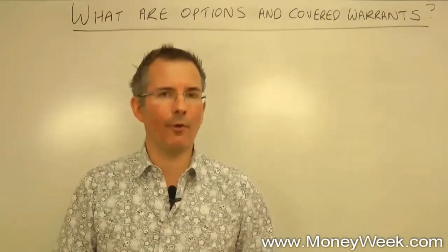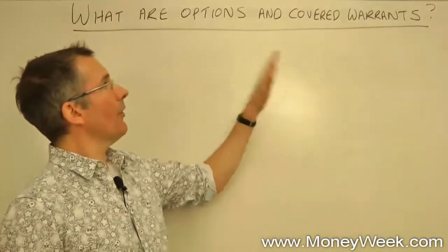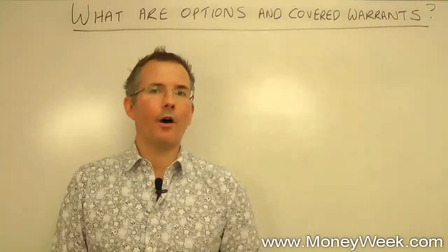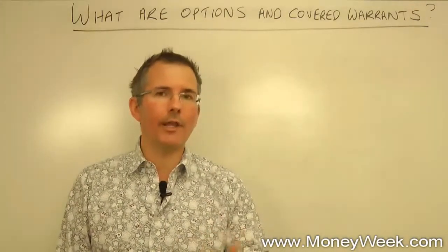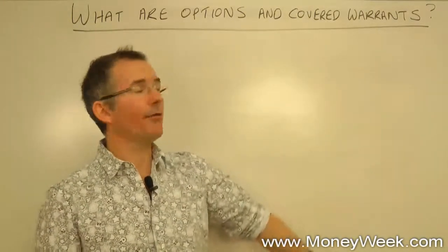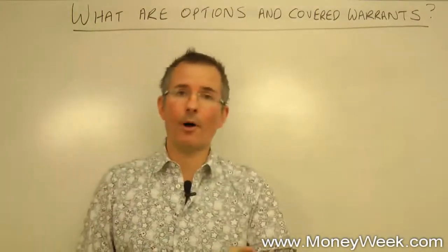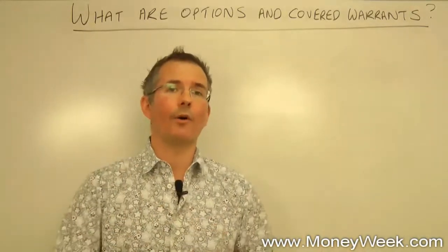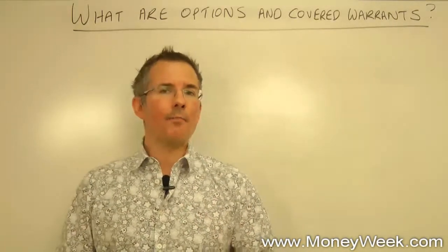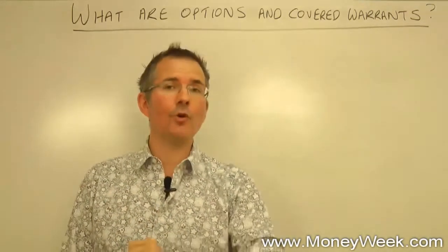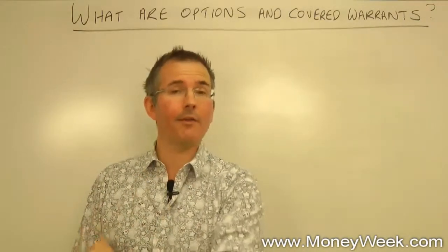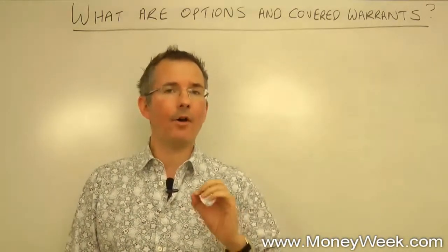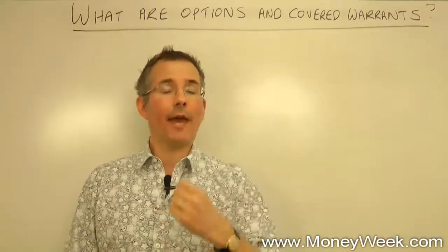Options tend to be what professional traders deal with. Covered warrants are the very similar retail equivalent — when you see adverts for products in the retail market they often have a slightly different name, but the two are very similar. Everything I say about options can be broadly applied to covered warrants. First of all, we are dealing with a derivative. There are basically only three types of derivative: forwards and futures, swaps, and options — and don't forget a derivative is simply something that derives its value from something else.